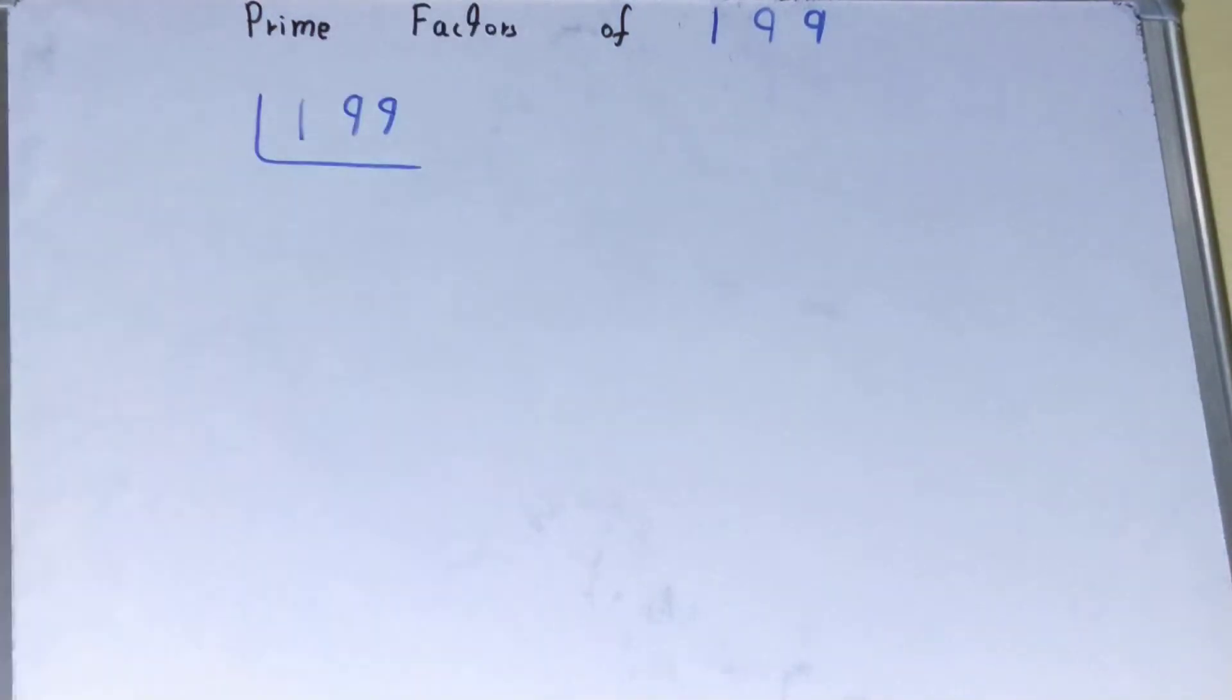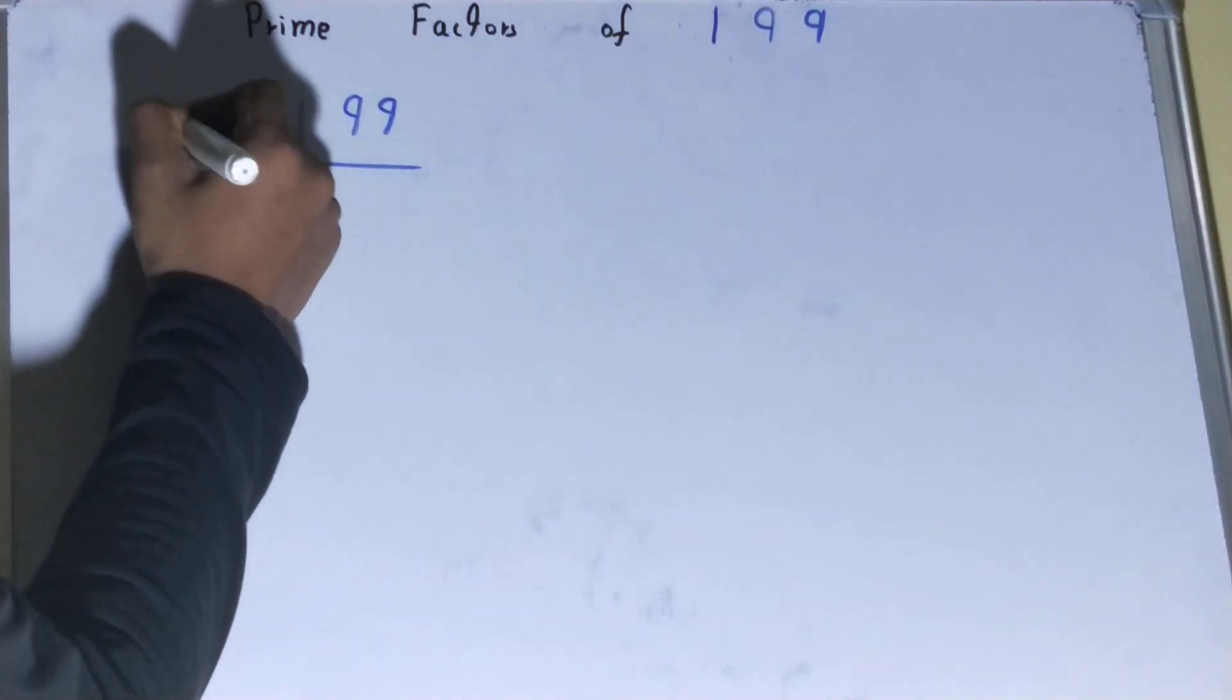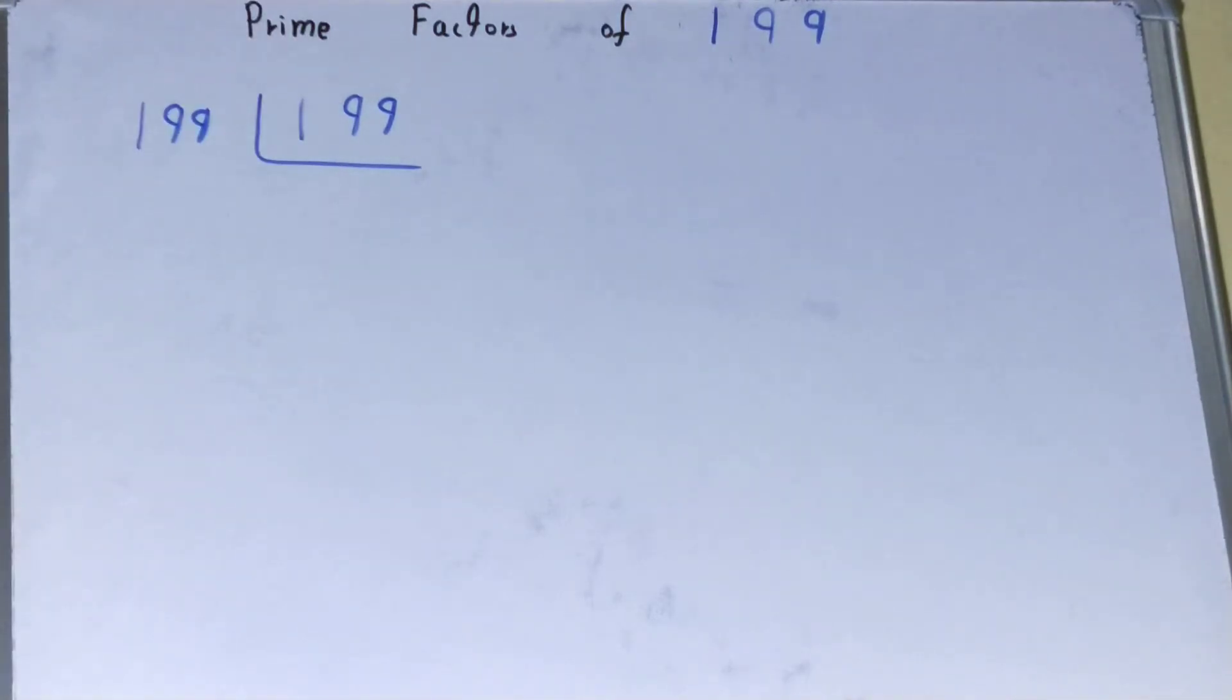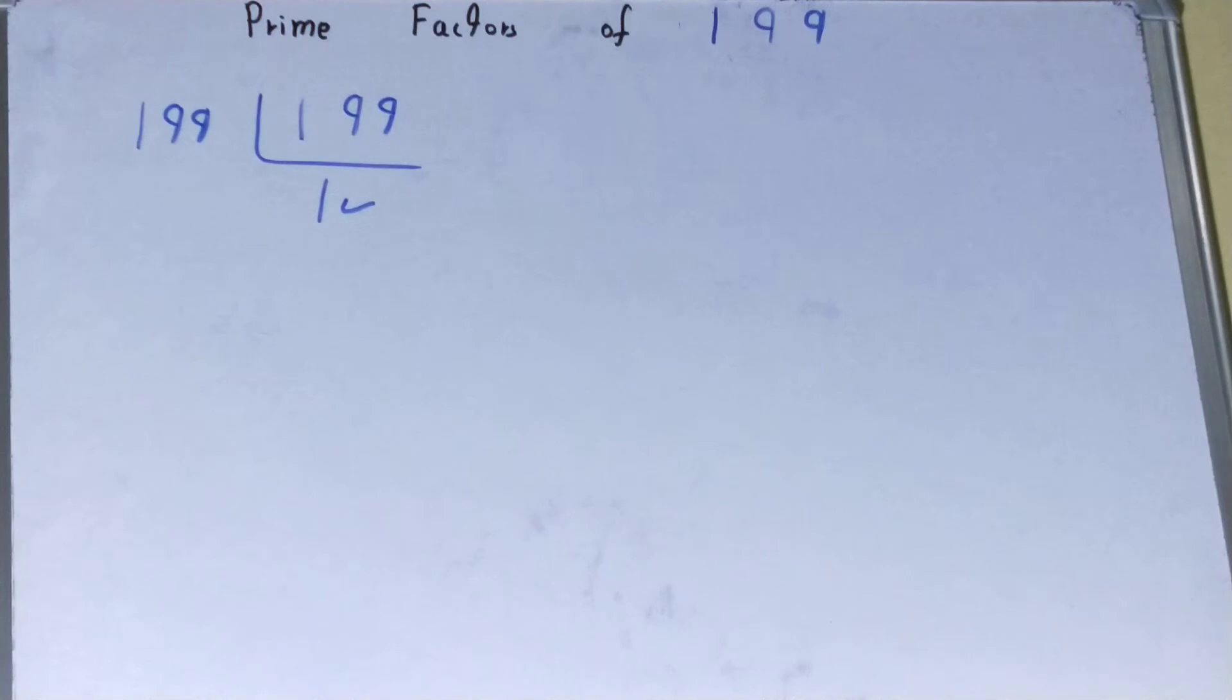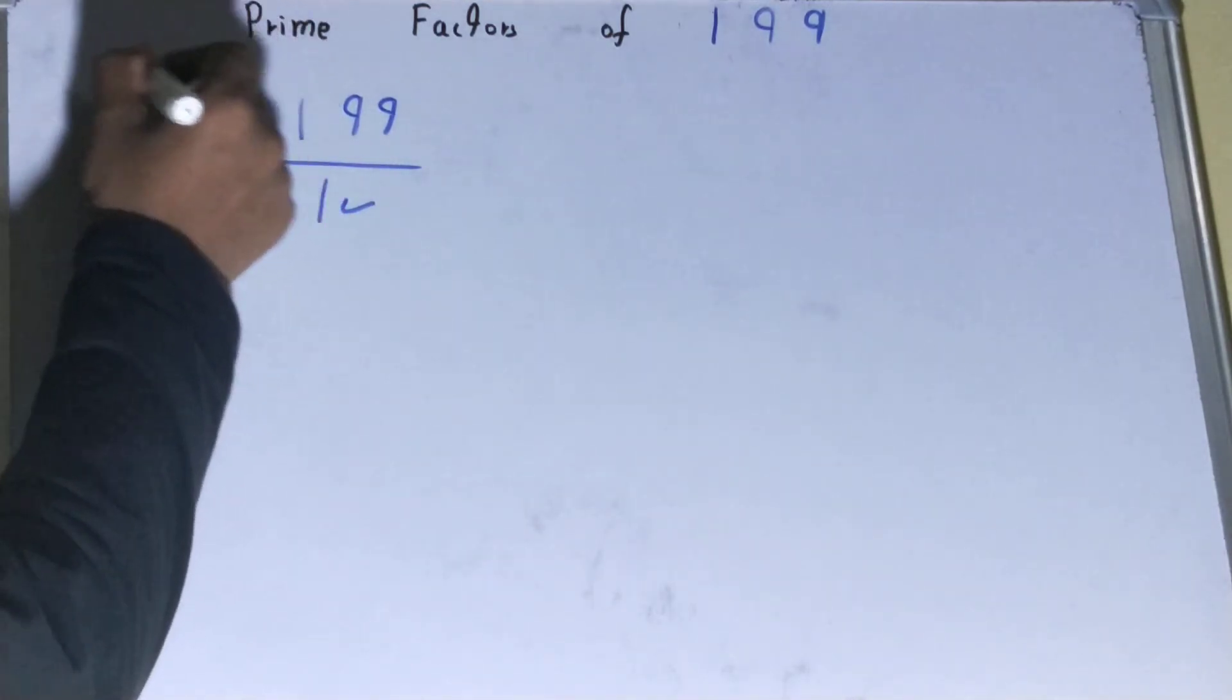Because 199 is a prime number, it is only divisible by itself, and that's why you need to write it on the left-hand side also. Once you do so, you will have one as the value. Once you have one, the work is done, and whatever you have on the left-hand side will be the set of prime factors for the number 199.